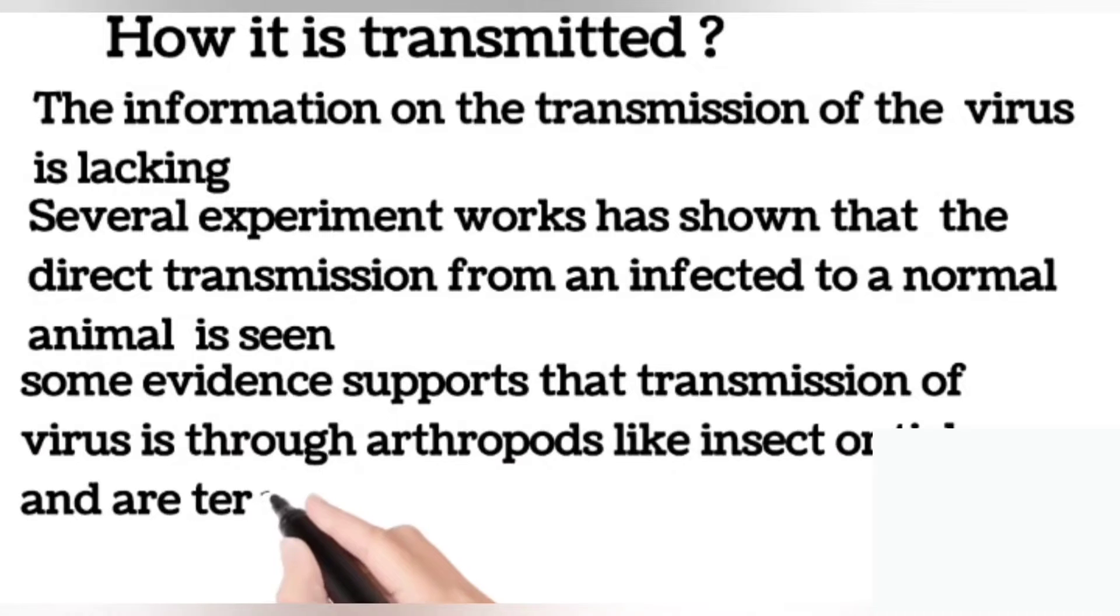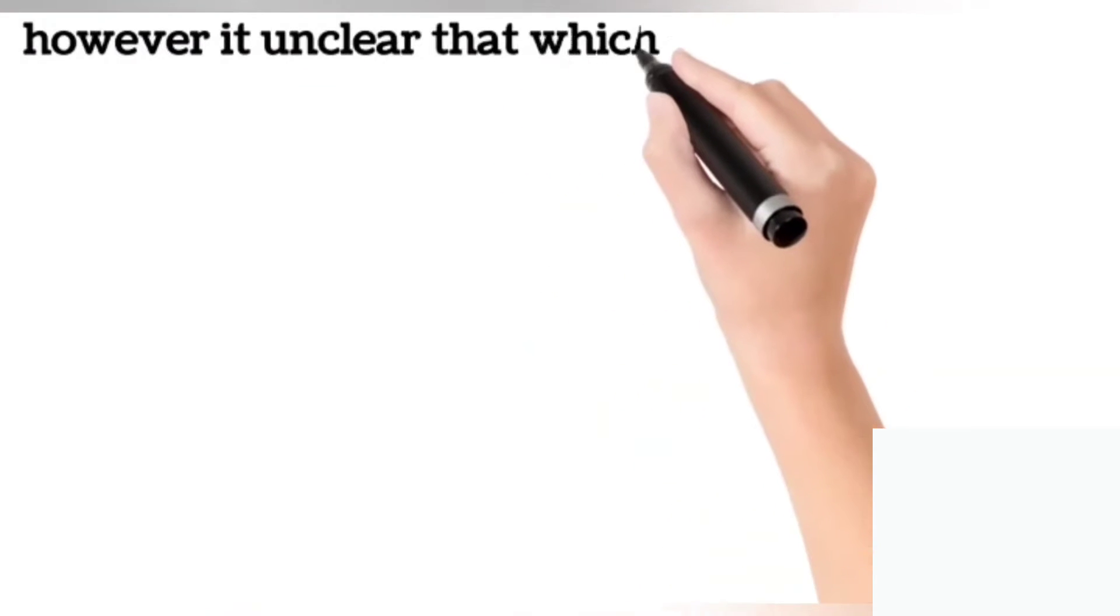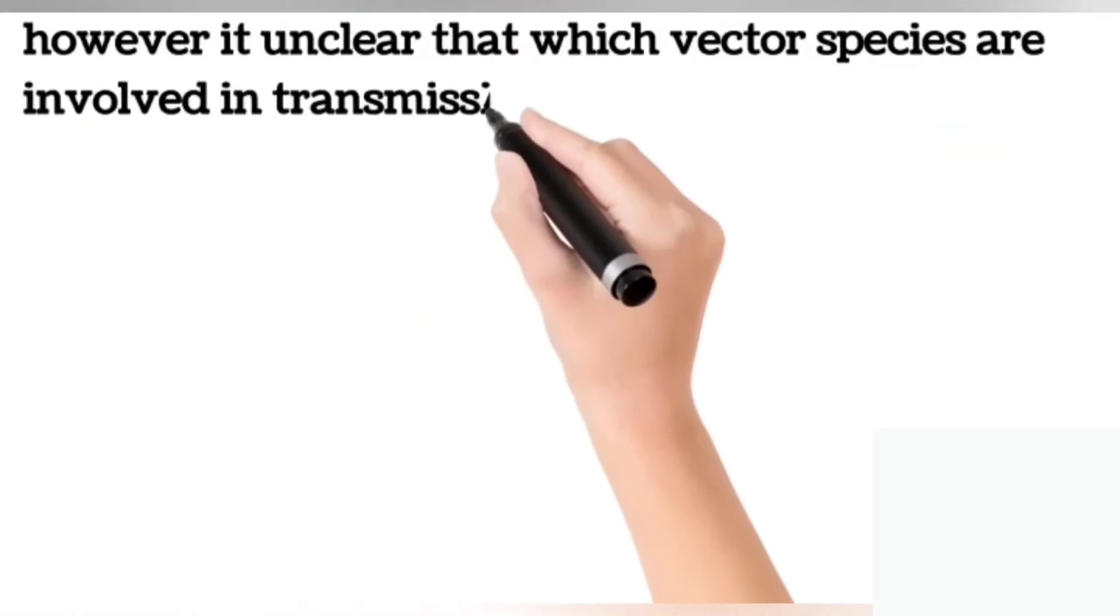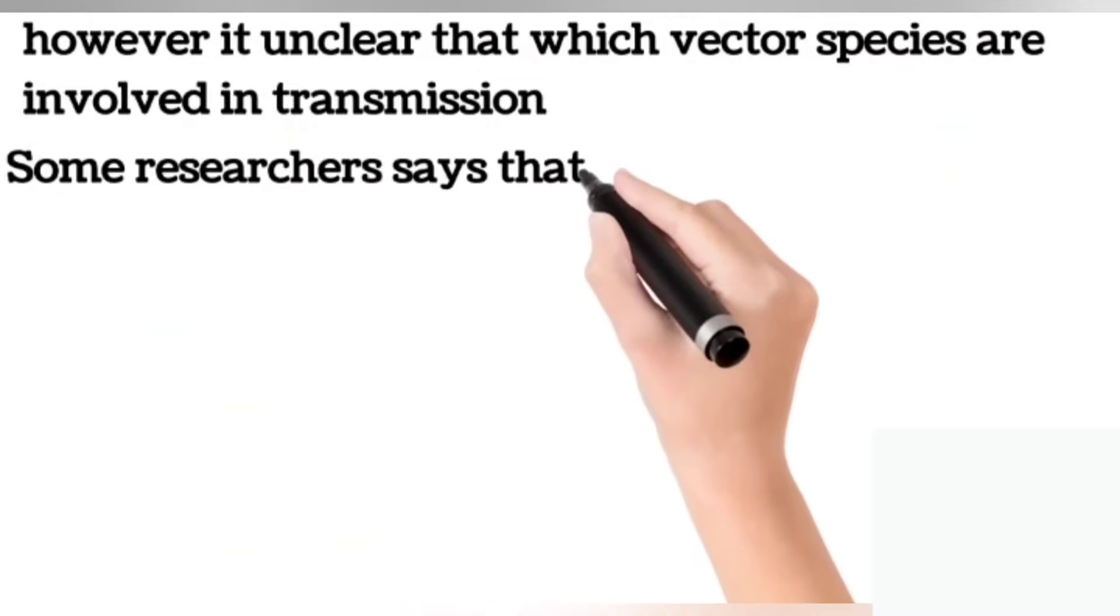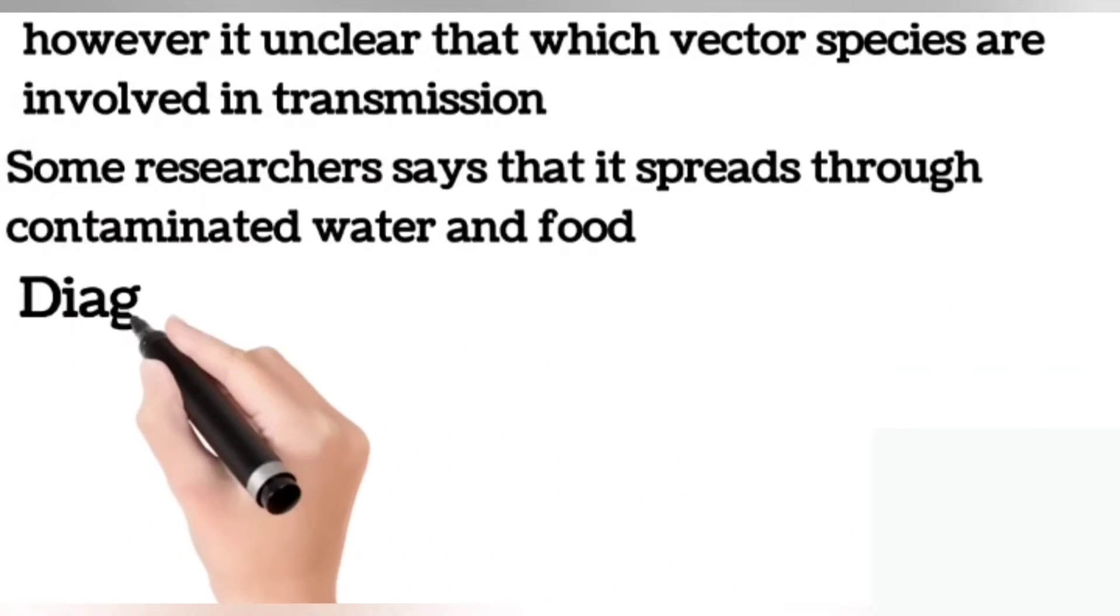Vectors are the carrier molecules. However, it is unclear which vector species are involved in transmission. Some researchers say that it spreads through contaminated water and food.